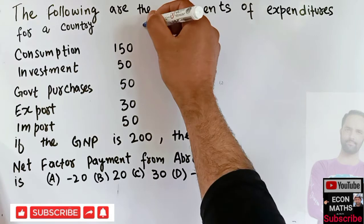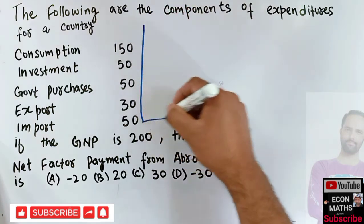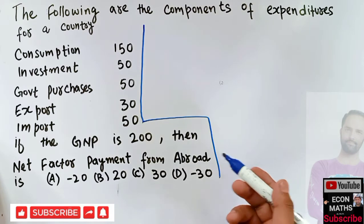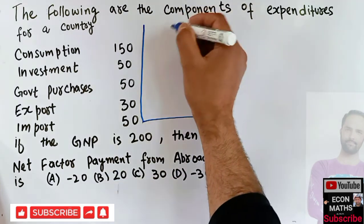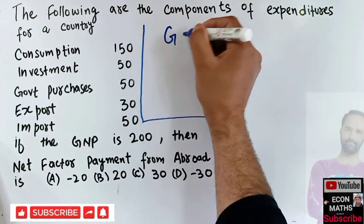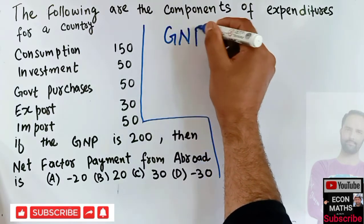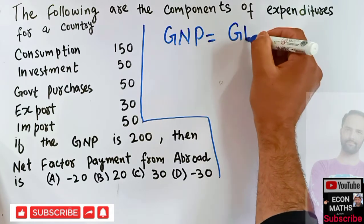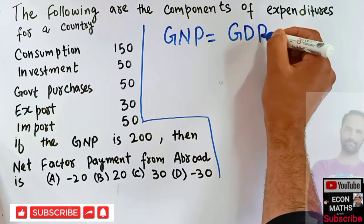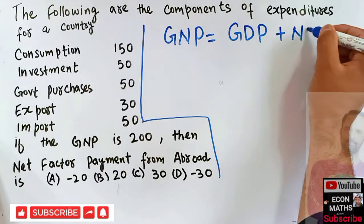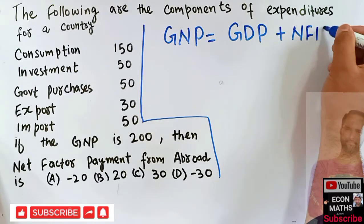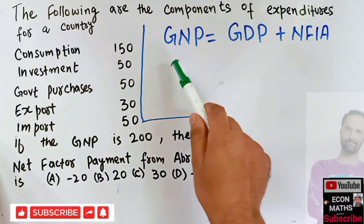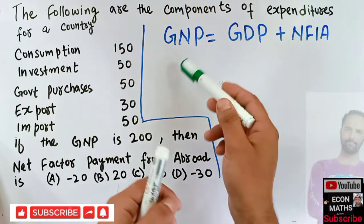We need to find out the net factor income from abroad. Simple thing—we know that our gross national product is simply equal to our GDP, that is gross domestic product, plus net factor income from abroad. This is the basic relationship between GNP and GDP.